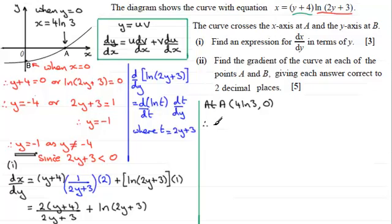So if we substitute these values into dx dy, we therefore have dx by dy equals, and putting y as 0 in here, we end up with 2 times 4, which is 8, over just simply 3. So we've got 8 thirds, and then plus, and putting 0 for y into here, just gives us plus the natural log of 3.